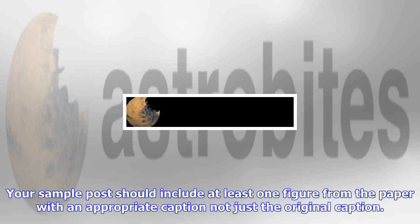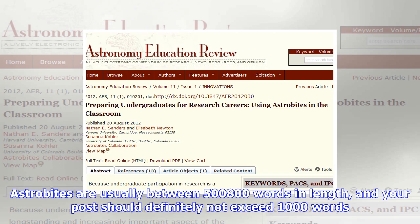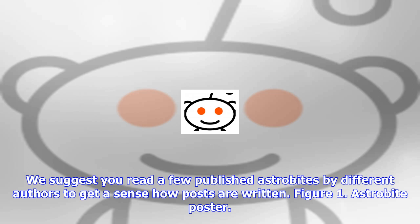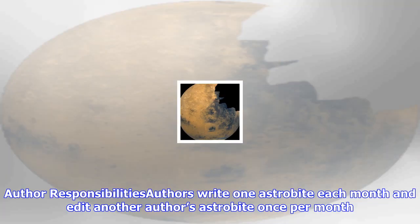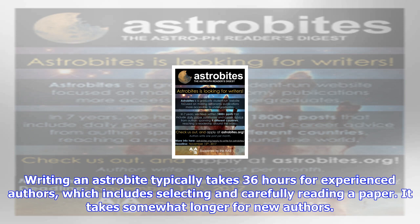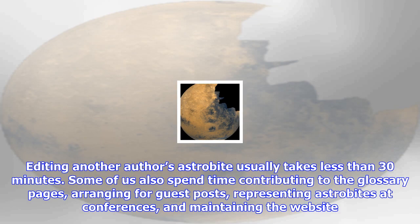Title your sample Astrobyte as you would title a post on the site. Write at a level appropriate for undergraduate physics or astronomy majors. Effective Astrobytes avoid jargon and thoroughly yet succinctly explain unfamiliar concepts. We encourage you to provide links to previous Astrobytes or other websites where appropriate. Your sample post should include at least one figure from the paper with an appropriate caption, not just the original caption. Astrobytes are usually between 500–800 words in length and your post should definitely not exceed 1,000 words. We suggest you read a few published Astrobytes by different authors to get a sense of how posts are written.